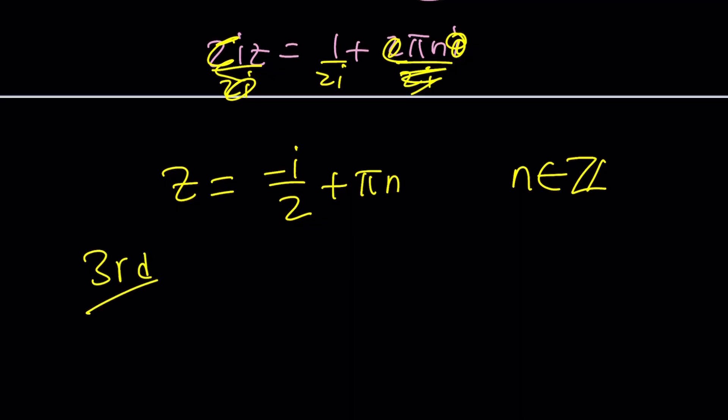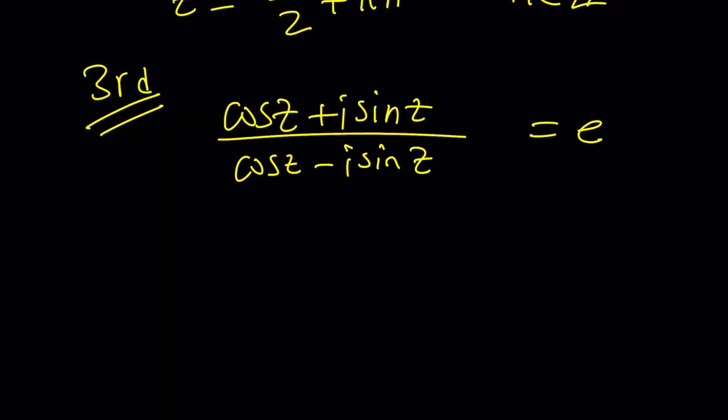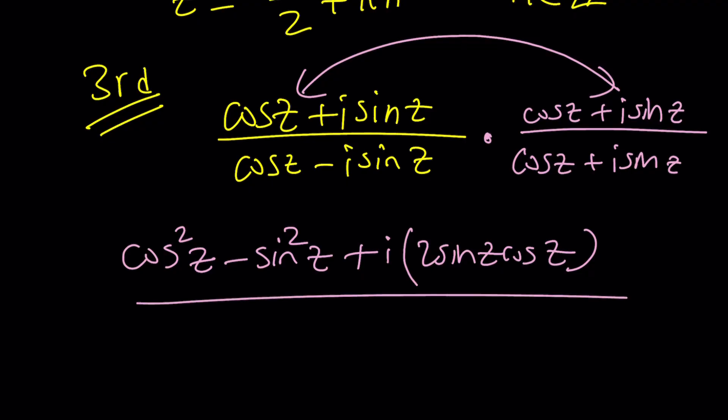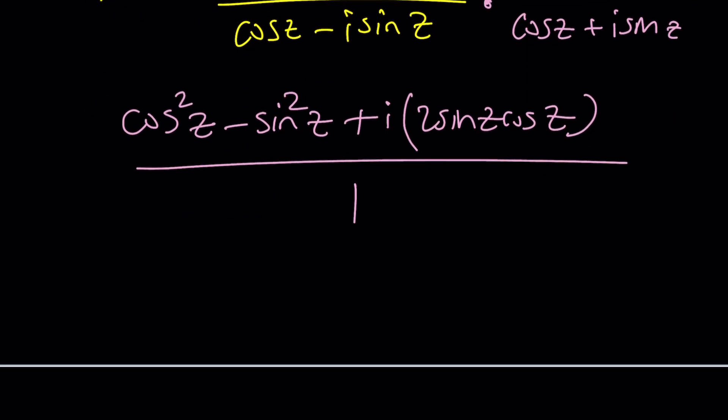Now let me quickly talk about the third method. One of the things we learn about complex numbers is whenever you have a complex number in the denominator, always multiply by the complex conjugate. So why not multiply this by cosine z plus i sine z, and then multiply this by cosine z plus i sine z. Of course when you multiply these two things, you're squaring them. So when you square something like that, you're going to get cosine squared z. And then when you square this, you're going to get minus sine squared z. And when you multiply the two, you're going to get 2i sine z cosine z, all over sine squared plus cosine squared, which is one.